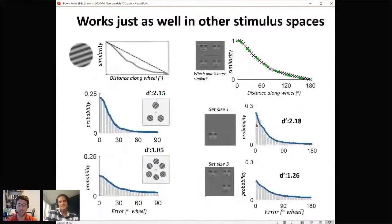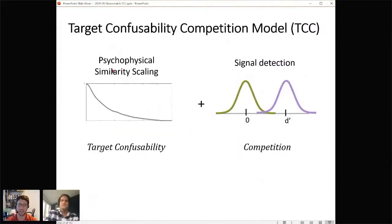This isn't about color. Here's the similarity function for oriented gratings, here it is for continuous face space, and here's the corresponding memory fits. Again, basically measuring this similarity function seems to work perfectly.